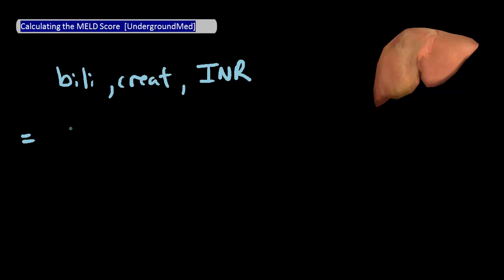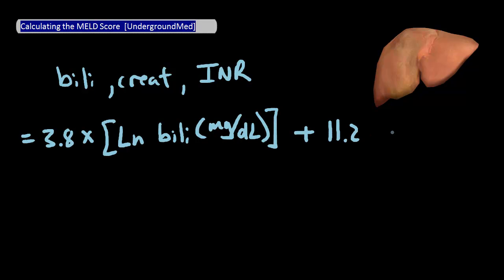Your MELD score is equal to 3.8 times the natural log of your serum bilirubin, and that's in milligrams per deciliter, plus 11.2 times the natural log of your INR time.